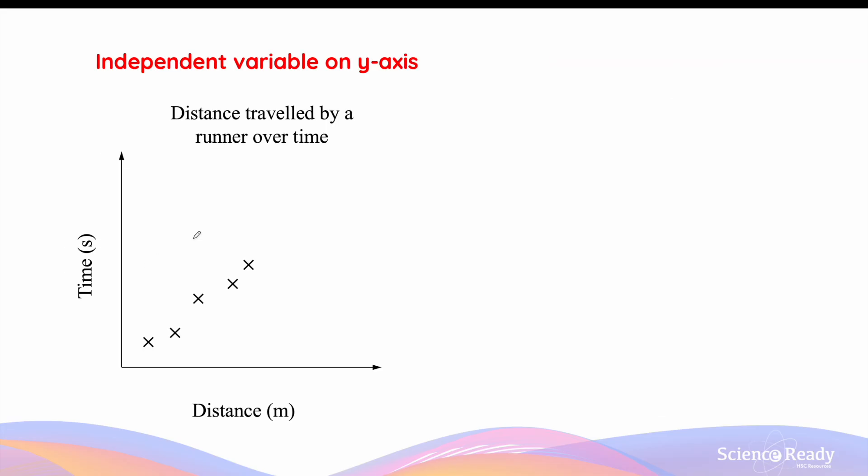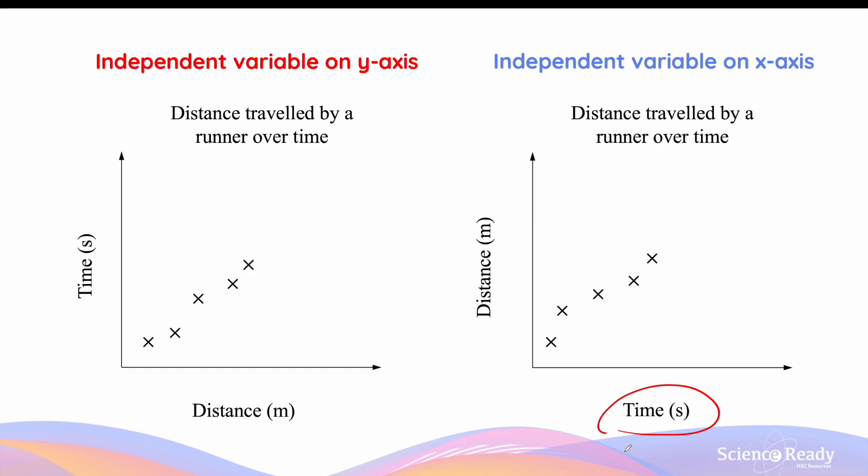The second feature that's incorrect about this graph is the placement of the variables on the x- and y-axis. Time, which is the independent variable of this experiment, is incorrectly placed on the y-axis. And the dependent variable distance is also incorrectly placed on the x-axis. Their positions on the graph should be switched around. Your independent variable, such as time, should always be placed on the x-axis. Therefore, your dependent variable, such as distance, should always be placed on the y-axis.